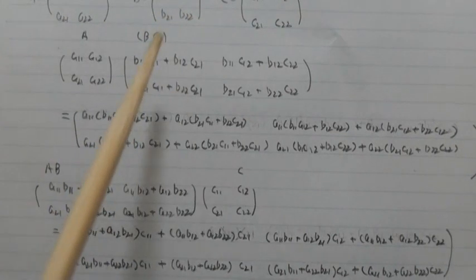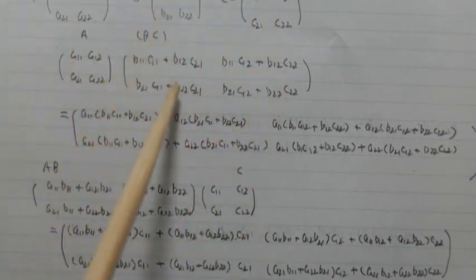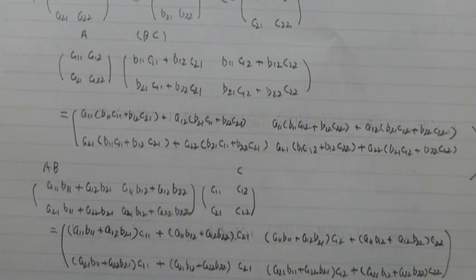1,1, 1,2, 2,1, 2,2, this component and AB multiple C, AB, A multiple C.